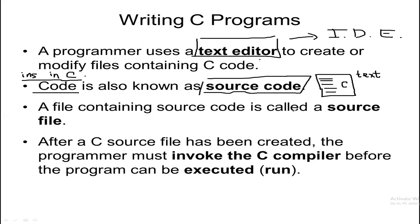You can open a source code with, for example, Notepad, and check it, because source code is just text written in C language. A file containing source code is called a source file. When you write a text and save it to the hard disk with a name, it becomes the source file.